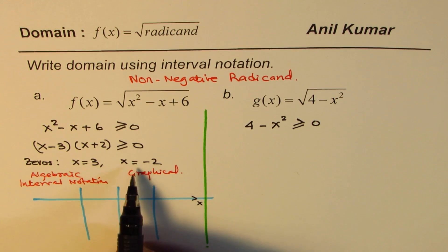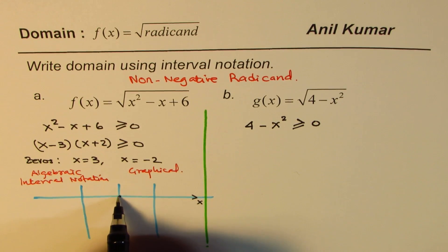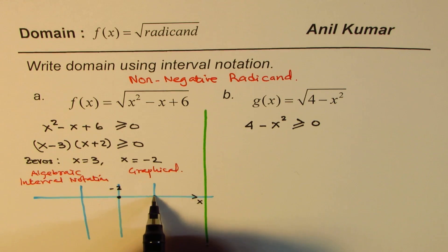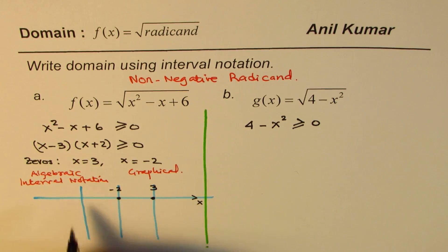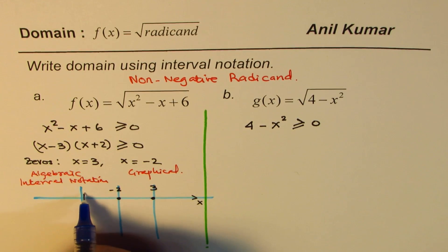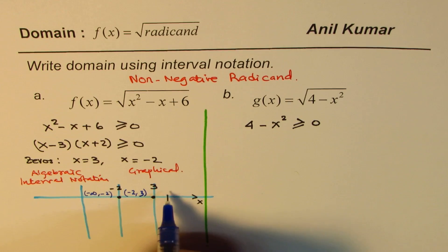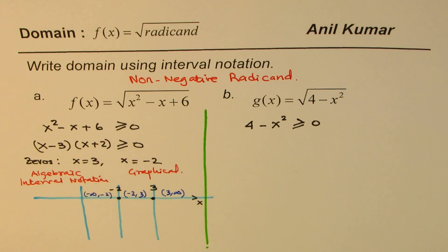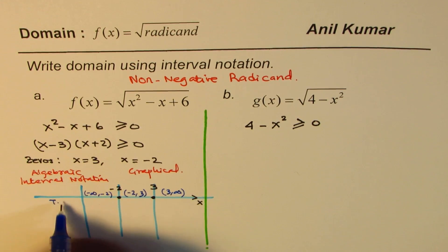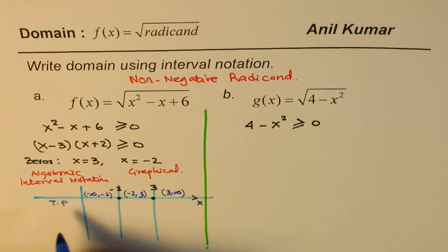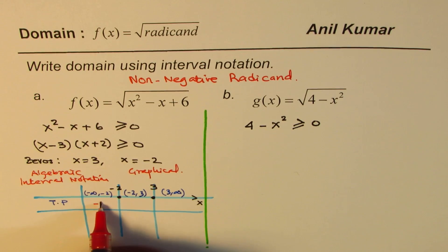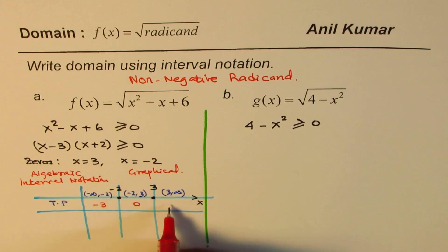Two zeros will give us three intervals. So we have zero at minus 2, and then we have a zero at 3. Because of these zeros, we have the interval minus infinity to minus 2, and then from minus 2 to 3, and from 3 to infinity. So three intervals. In these three intervals, we take test points. Test point in the first interval could be any number within this interval. Let's take it as minus 3. Test point here could be zero, and then we can take 5 as a test point.